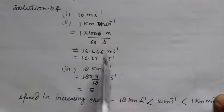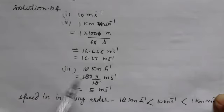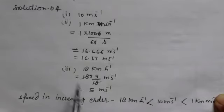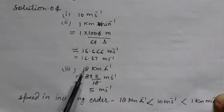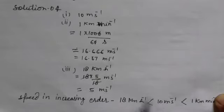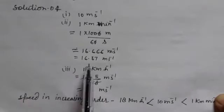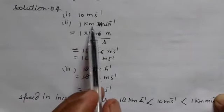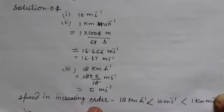Arranging in increasing order: 5 meters per second, then 10 meters per second, then 16.66 meters per second (which is 1 km per minute). This gives us the speeds in increasing order, with 5 m/s being the least speed.